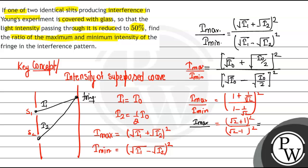I_max upon I_min: √2 is 1.414, so that's (1.414 + 1) divided by (1.414 - 1), whole squared. That's 2.414 divided by 0.414, whole squared, which gives around 33.6.